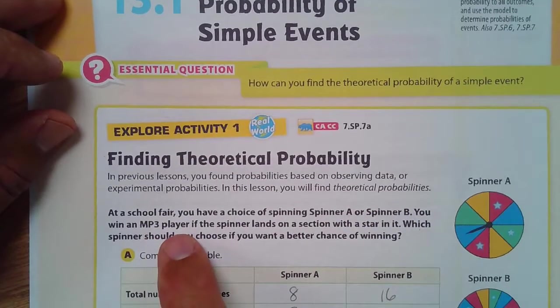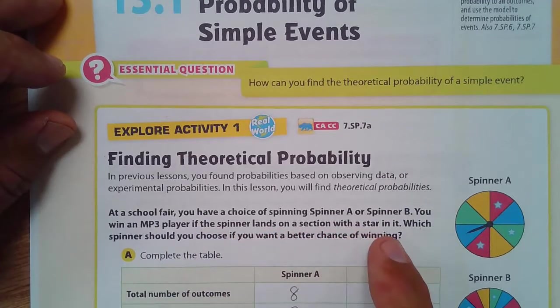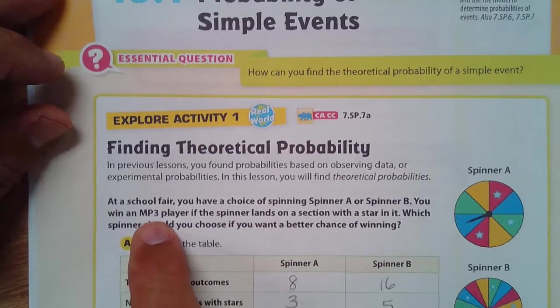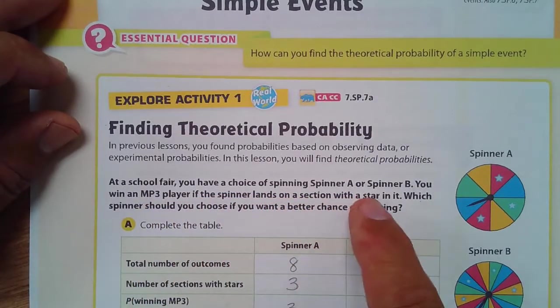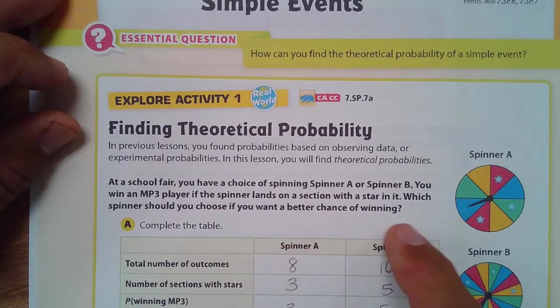At a school fair, you have a choice of spinning spinner A or spinner B. You win an MP3 player if the spinner lands on a section with a star in it. Which spinner should you choose if you want a better chance of winning?